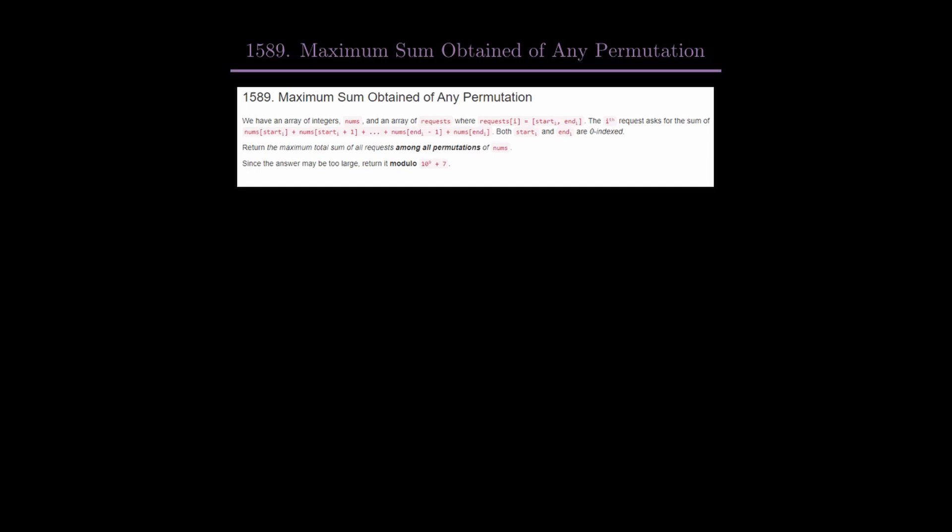The i-th request asks for the sum from nums[start_i] up to nums[end_i]. We have to return the maximum total sum of all requests among all permutations of nums. The answer should be printed modulo 10^9 + 7. Let's jump straight to an example test case.